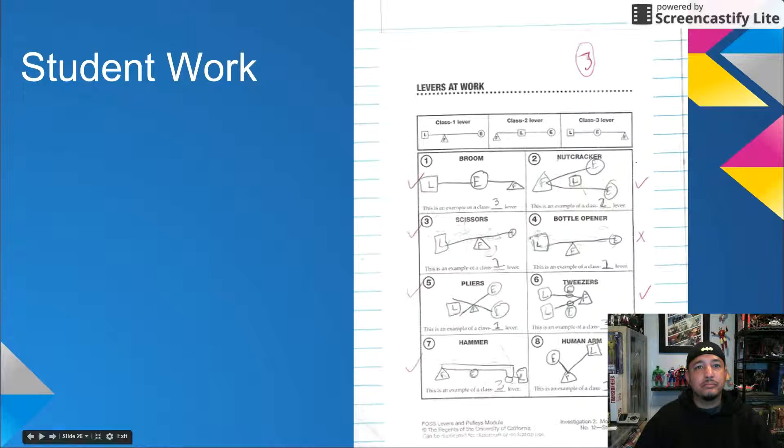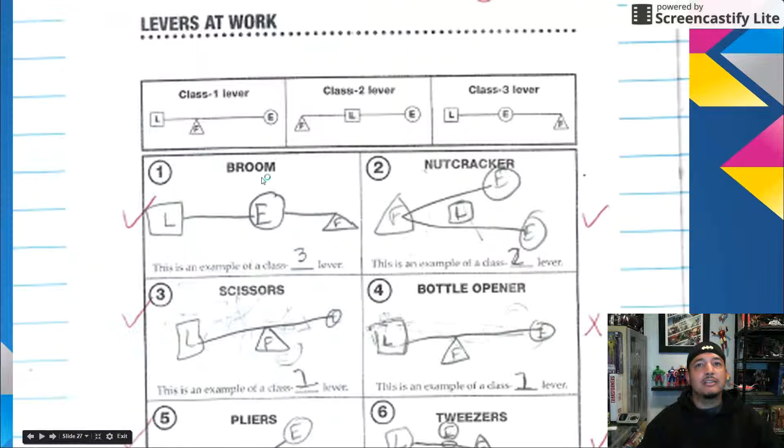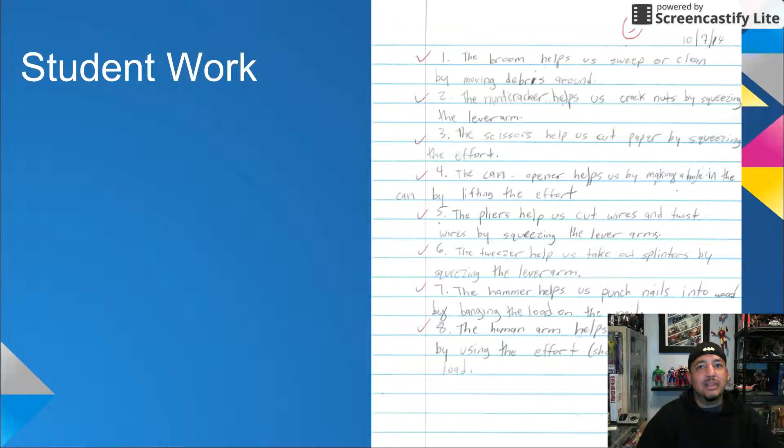Part four, by the way, can and should be used as an assessment. Now some final notes. The reading selection for part three is class three levers. The reading selection for part four is the inclined plane.